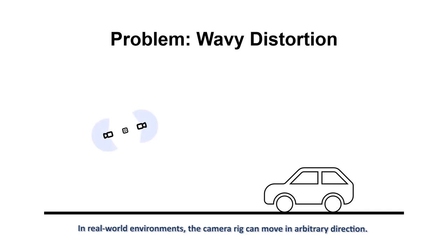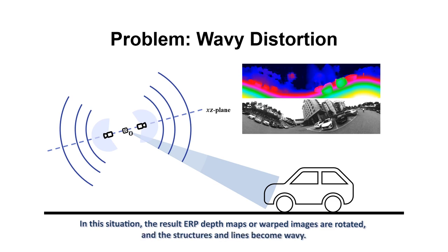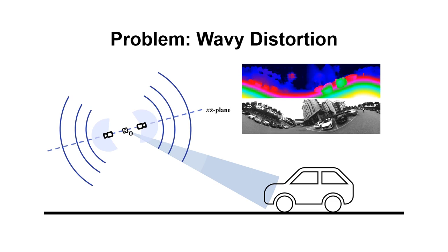In real-world environments, the camera rig can move in arbitrary direction. In this situation, the result ERP depth maps or warped images are rotated, and the structures and lines become wavy. These visual artifacts can lead to failures in visual scene understanding.